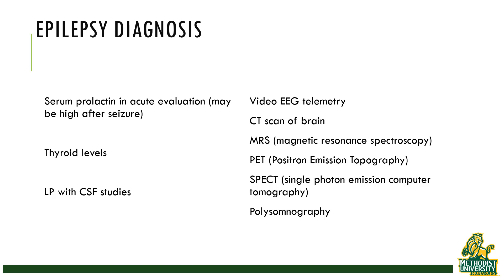Further studies may be done more rarely. In cases where the diagnosis is unclear, sometimes a study is done with a combination of EEG and video recording so that symptoms can be correlated with brain activity. CT is not usually helpful. Magnetic resonance spectroscopy and positron emission tomography would be ordered in specialized situations by the neurologist. Sleep studies — polysomnography — may be helpful when it is suspected that somebody is having seizures during sleep.